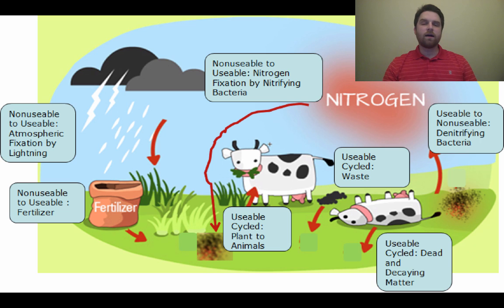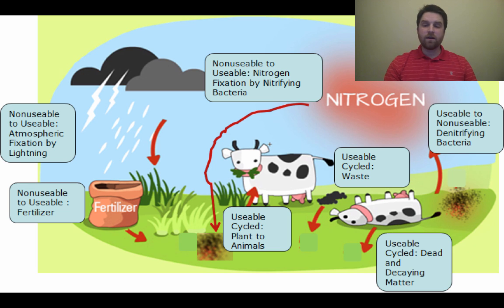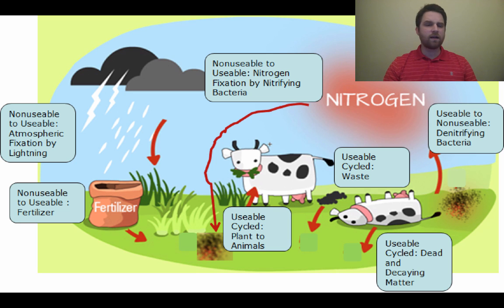For example, at the very top of the diagram, you've got non-usable to usable nitrogen fixation by nitrifying bacteria — that means some bacteria actually convert non-usable nitrogen into usable nitrogen. Also, when plants or animals die, their dead and decaying matter — shown on the bottom right — can be recycled as usable nitrogen back into the soil. Pause if you need to and copy down all the different ways that nitrogen is cycled here.